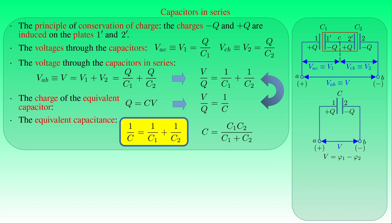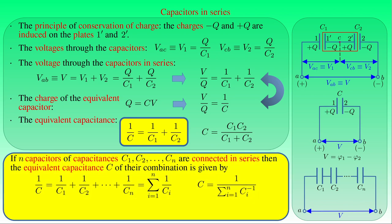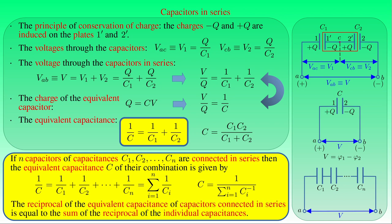Then the equivalent capacitance C is given by C₁ times C₂ divided by the sum of C₁ and C₂. We can generalize this result for n capacitors of capacitances C₁, C₂, ..., Cₙ connected in series: 1 over C equals 1/C₁ + 1/C₂ + ... + 1/Cₙ, or the sum of 1/Cᵢ from i equals 1 to n. Then C is given by 1 over the sum of the reciprocals of Cᵢ. In other words, the reciprocal of the equivalent capacitance of capacitors connected in series equals the sum of the reciprocals of the individual capacitances. It follows that the net capacitance of capacitors connected in series is always less than the capacitance of any of the individual capacitors. If each capacitor has the same capacitance, the equivalent capacitance equals the capacitance divided by their number.